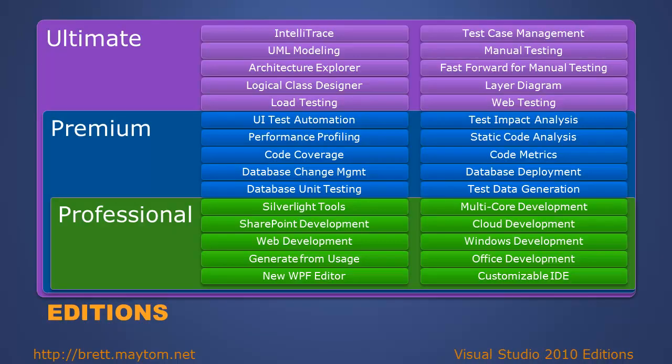The commercial editions are Professional, Premium, and Ultimate. Professional has everything you need to build common applications — all the Express limitations have been removed. It includes components for web development, Silverlight, and SharePoint. Multi-core development on both 32-bit and 64-bit are supported. Windows, Office, and cloud application development are also supported.